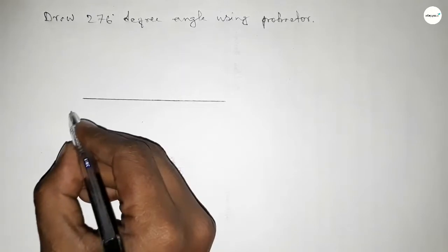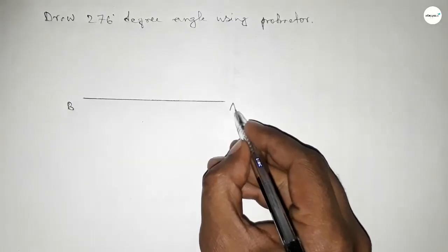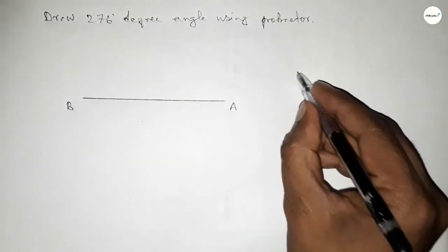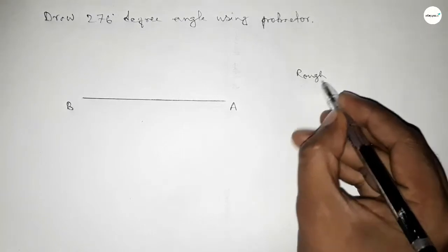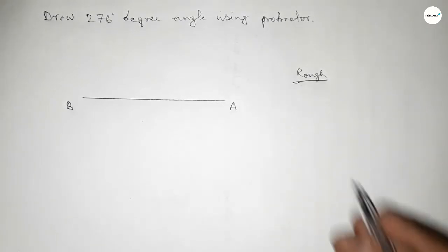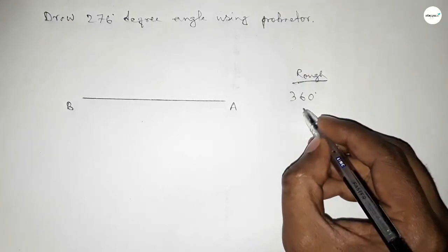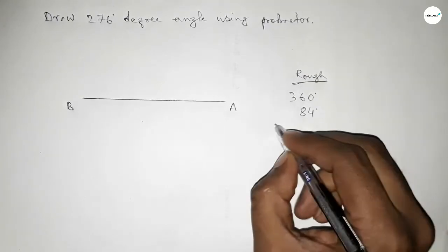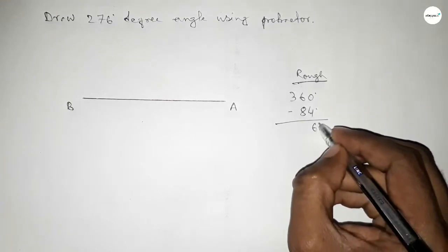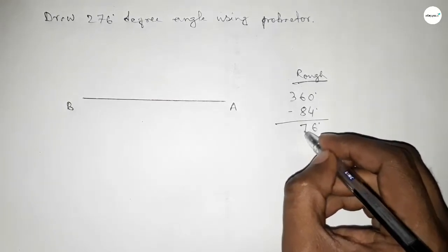Taking this end B point and here A point. Now roughly discussing some important calculation. So if we subtract 84 degree angle from 360 degree, then we can get 276 degree. This is 6 carry on, so this is 7 and this is 2.